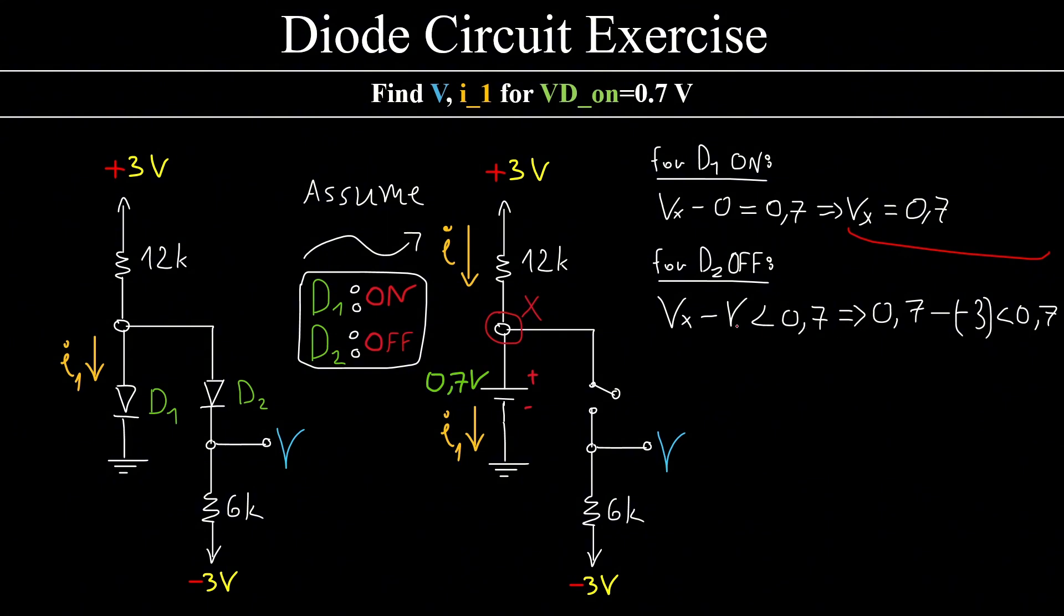That means Vx minus V, how much is V? Well, V is minus 0.3V. Why? Because no current flows here, no current flows upwards or downwards because it can't flow anywhere. So 0.7 minus the minus 3 must be less than 0.7, which means that plus 3 must be less than 0. As far as I'm concerned, this cannot happen. So that means our assumption again was wrong.